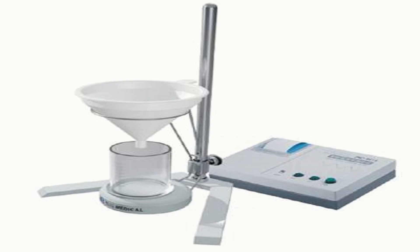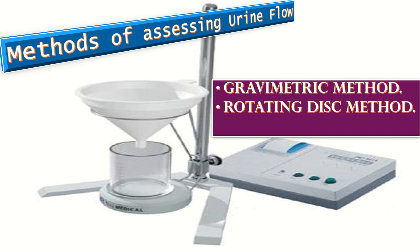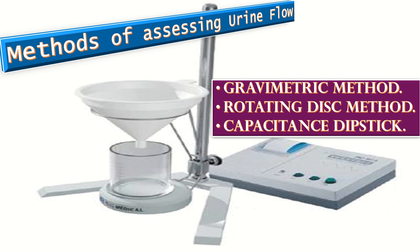What are the different methods of assessing urine flow? The three commonly used methods include: first, the gravimetric method, in which the rate of change of the weight of voided urine is measured. The second is the rotating disc method, in which the voided fluid is directed onto a disc, increasing its inertia, and the flow rate is proportional to the extra power required to keep the disc spinning at a constant rate. The third is the capacitance dipstick method, in which a metal capacitor strip is attached to the side of the flow meter.